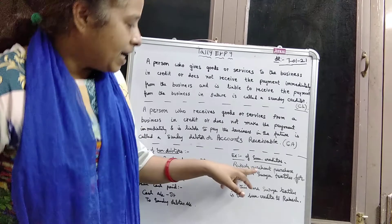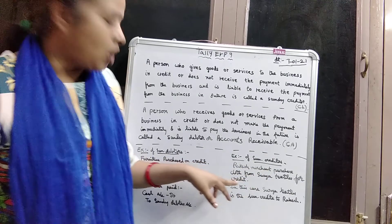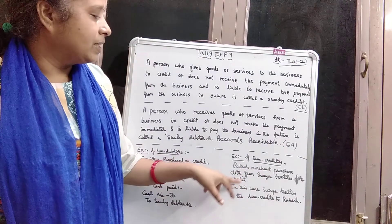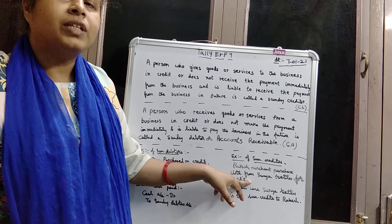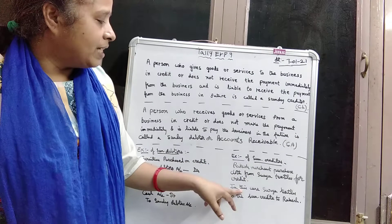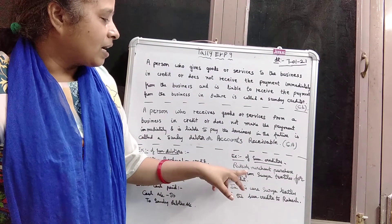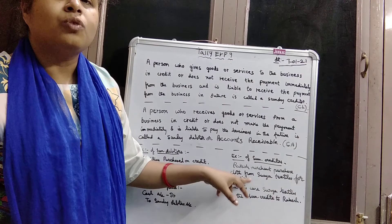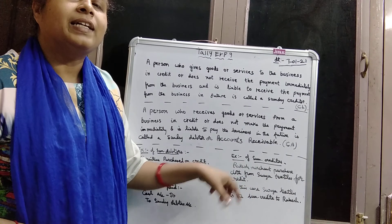For sundry debtors: Rakesh Merchant purchased cloth from Surya Textiles on credit, not for immediate payment. So here Rakesh is the sundry debtor, and for Surya Textiles, Rakesh is the sundry creditor. This is the example for sundry creditors and sundry debtors.